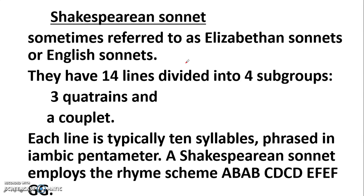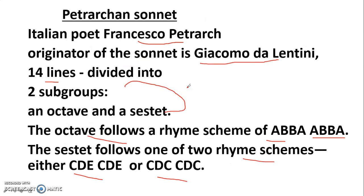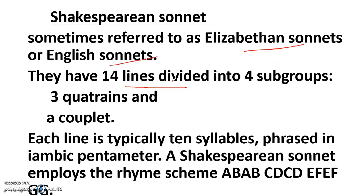The Shakespearean sonnet form evolved in England during and around the Elizabethan era, and these sonnets are sometimes referred to as Elizabethan sonnets or English sonnets. They have 14 lines divided into four subgroups — three quatrains and one couplet — and each line is typically 10 syllables phrased in iambic pentameter.